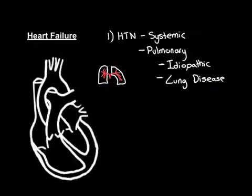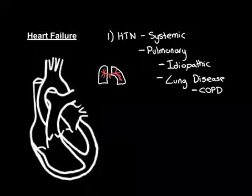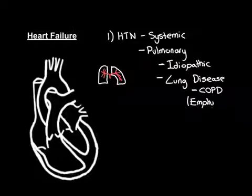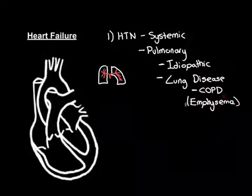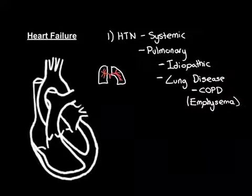Lung diseases that can cause pulmonary hypertension include advanced emphysema, as occurs in COPD. Emphysema causes holes in your lungs — it leads to destruction of lung tissue replaced by large air spaces, which is a component of COPD. Remember, COPD is a smoking-related disease of the lung with two components: emphysema — lung tissue breaking down into holes — and chronic bronchitis, which is narrowing of the actual airways. Emphysema is the part that leads to pulmonary hypertension.